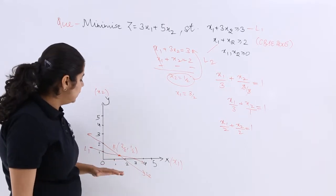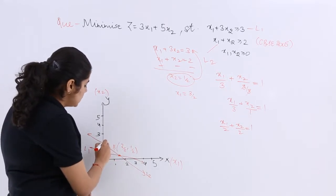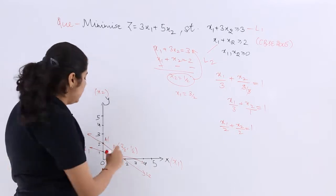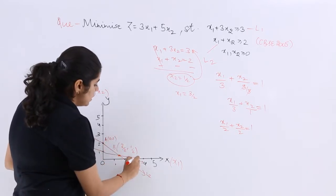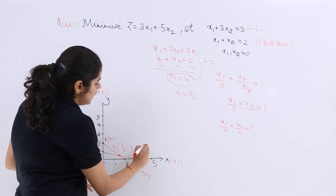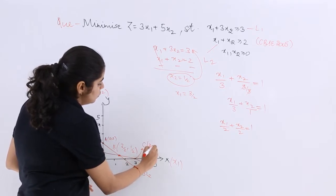Now, what all intersection points are there? This is a point. It can be named as A. And what should be A? It should be 0, 2. This is an intersection point. It can be named as C. It is 3, 0.